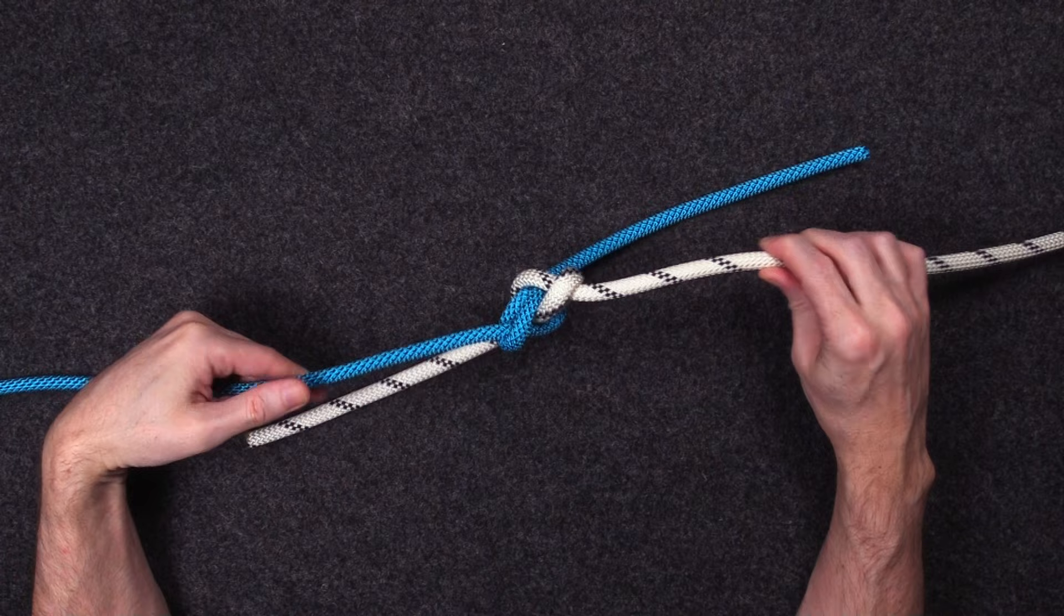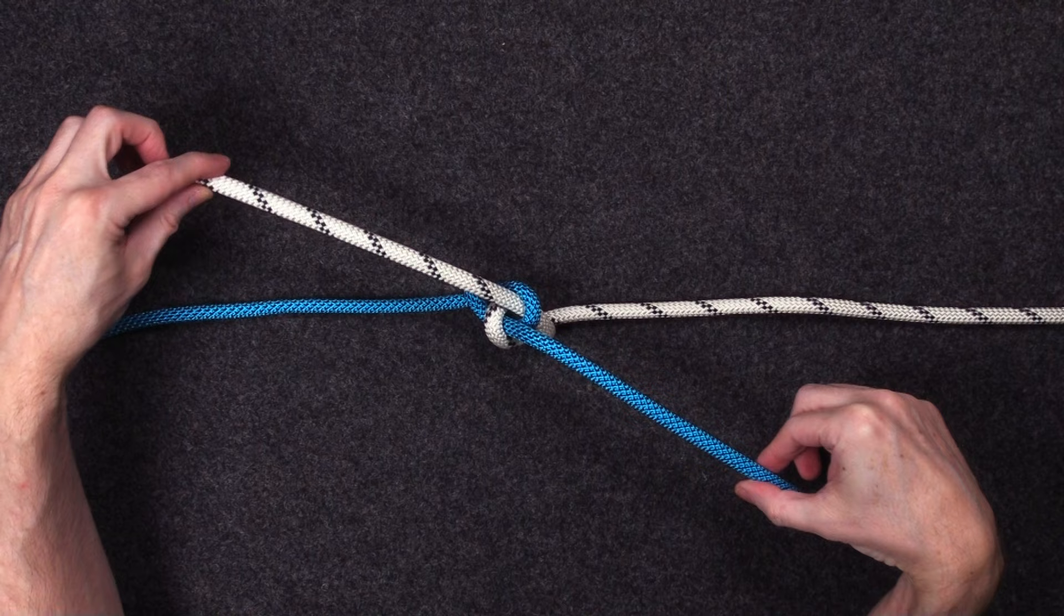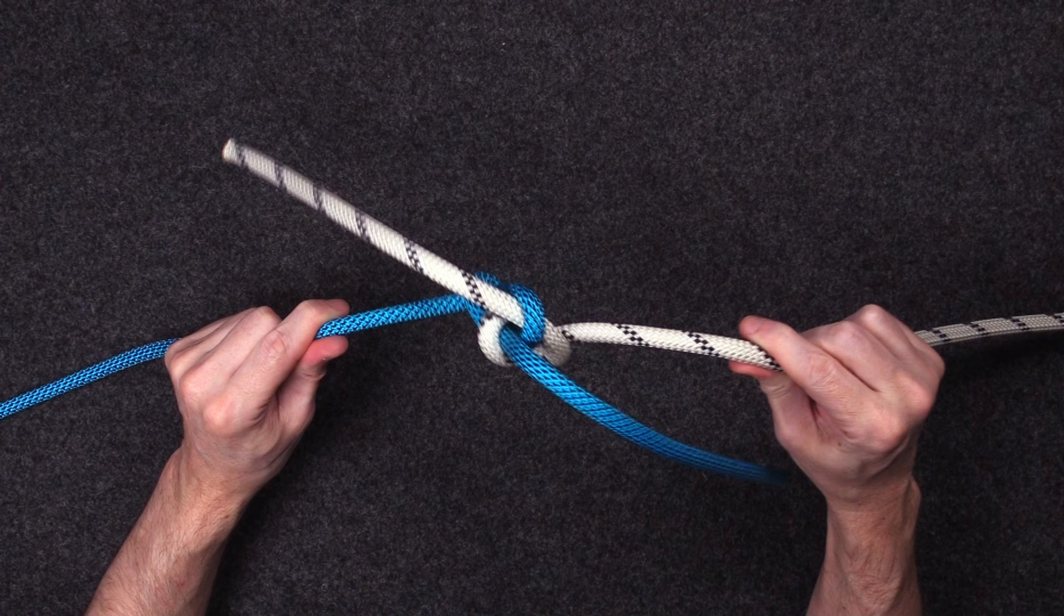We've deliberately capsized it. Now if you have a look at the bottom, you'll see that the working ends are diagonally opposed. This is often spoken about when tying the proper version of the Carrick Bend for joining two ropes together.